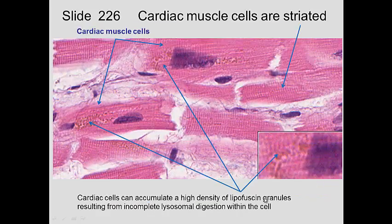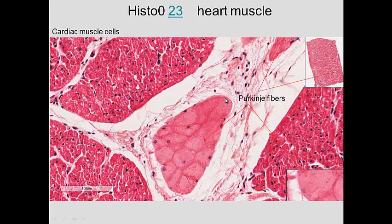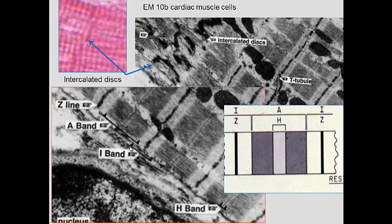Cardiac muscle also accumulates lipofuscin — undigested parts of cells — which appears as a yellow-golden pigment in aged muscle cells. Looking at the heart, there is the SA node, AV node, the bundle of His, and Purkinje fibers, which cause both ventricles to contract at the same time. Histologically, Purkinje fibers have very large, modified cardiac muscle cells. These cells have a lot of glycogen that leaches out during processing, making them lighter staining than regular cardiac muscle cells.